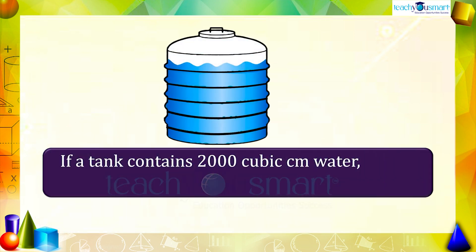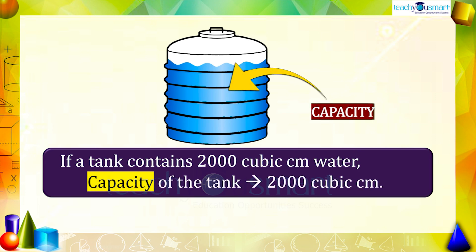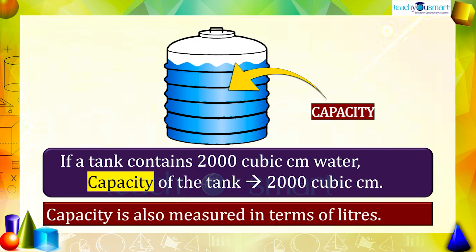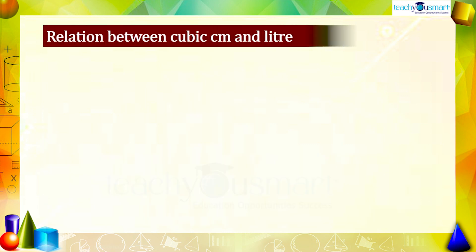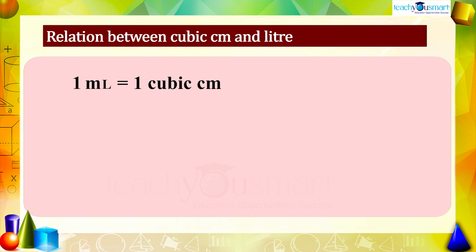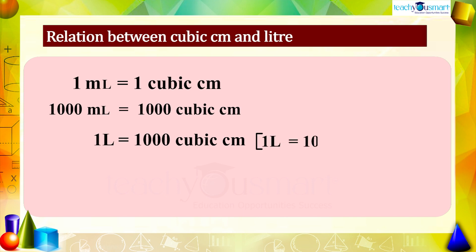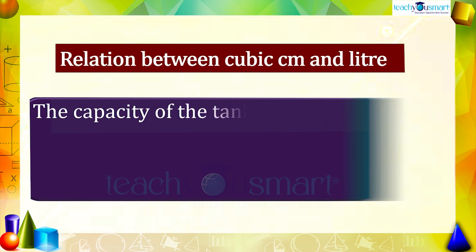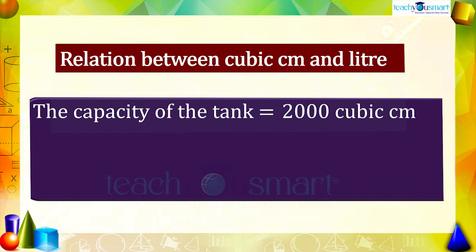If a tank contains 2,000 cubic centimeters of water, we can say that the capacity of the tank is 2,000 cubic centimeters. But capacity is also measured in liters, so we can convert cubic centimeters to liters. We have seen that one milliliter equals one cubic centimeter, so one thousand milliliters equals one thousand cubic centimeters, that is one liter equals one thousand cubic centimeters. Therefore one cubic centimeter equals one divided by one thousand liters, and the capacity of the tank equals 2,000 divided by 1,000 liters, which equals two liters.